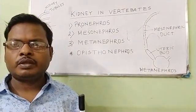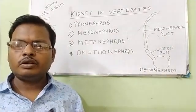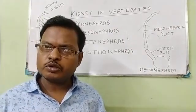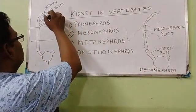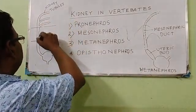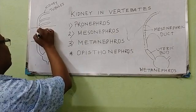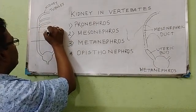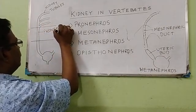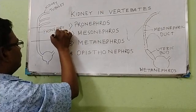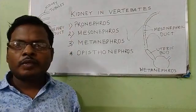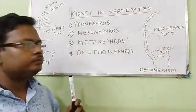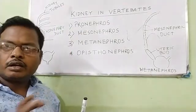The middle part of the nephrogenic mesoderm differentiates into more complicated kidney tubules, forming the Mesonephros. In the Pronephros, the kidney tubules are joined to a duct. This duct is retained in the Mesonephros, but only the anterior tubules of the Pronephros are lost.